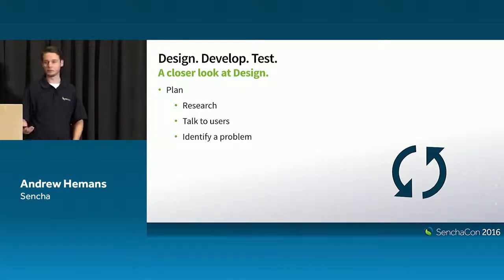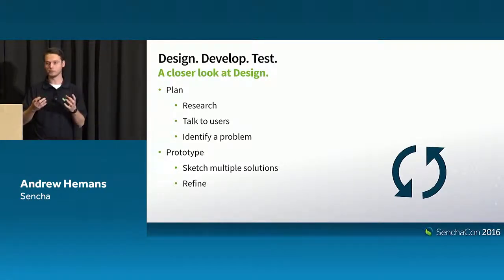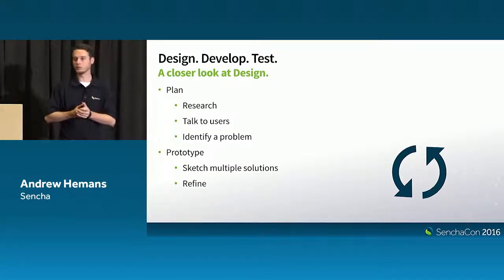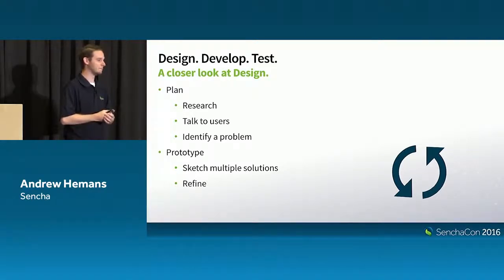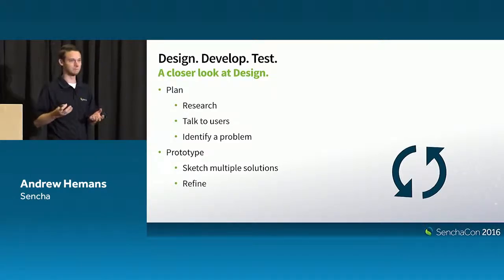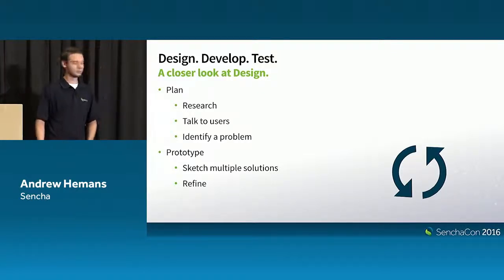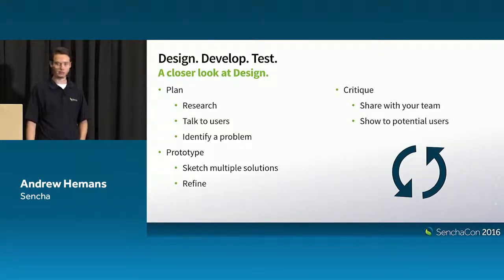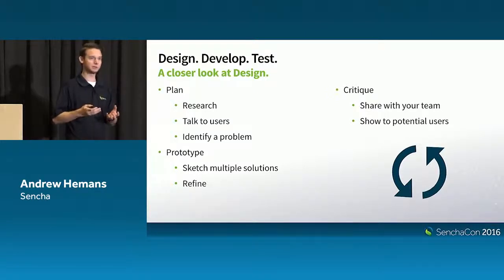In the planning stage, we want to talk about researching — talking to users and identifying problems. For design, the development process is prototyping, where we take everything we learned from our planning and research stages and put it into some physical form, whether that's a paper sketch or a fully coded or clickable prototype. I can talk about some tools for building clickable prototypes if anyone's interested. And then the last step is critique — the testing step.